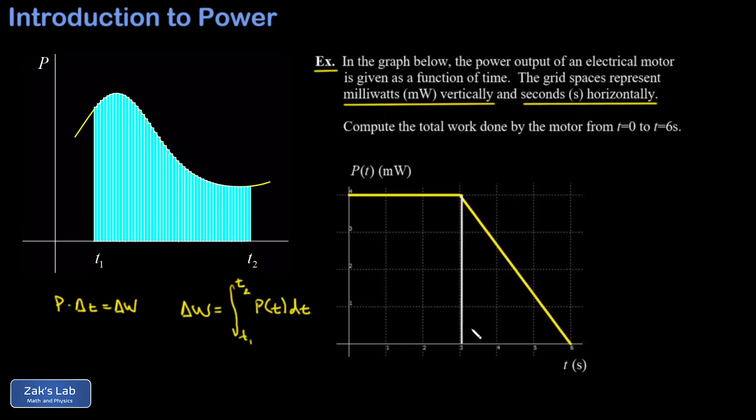We definitely don't need any calculus here. We just break it into a rectangle and a triangle. Our rectangle has a width of 3 seconds and a height of 4 milliwatts. This rectangle has an area of base times height: 4 milliwatts multiplied by 3 seconds.